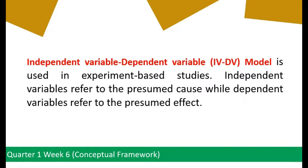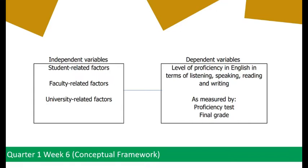The Independent Variable-Dependent Variable model, or IV-DV model, is used in experiment-based studies. The independent variable refers to the presumed cause, while the dependent variable refers to the presumed effect. Here is an example of the IV-DV model of Conceptual Framework.